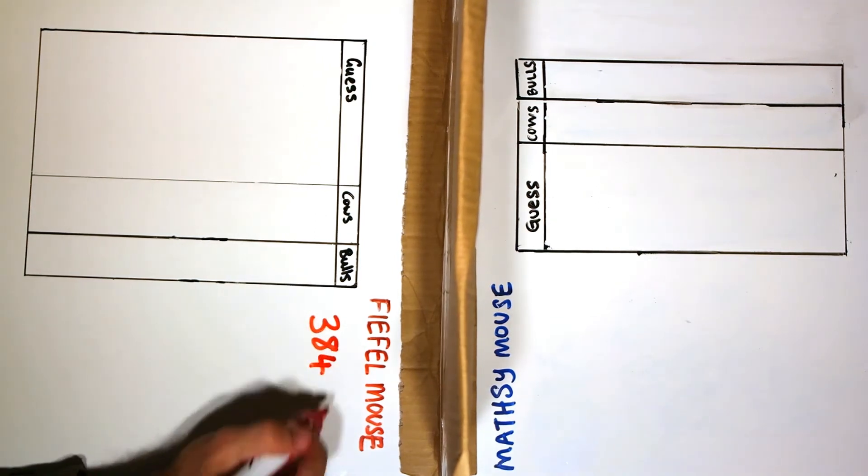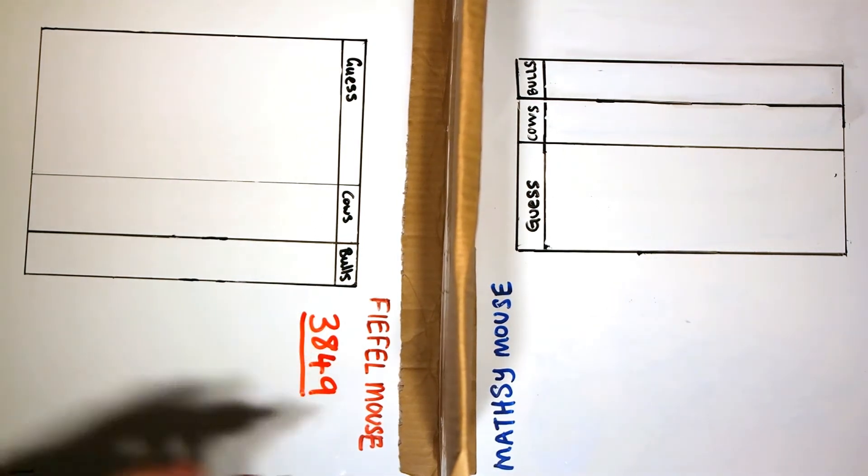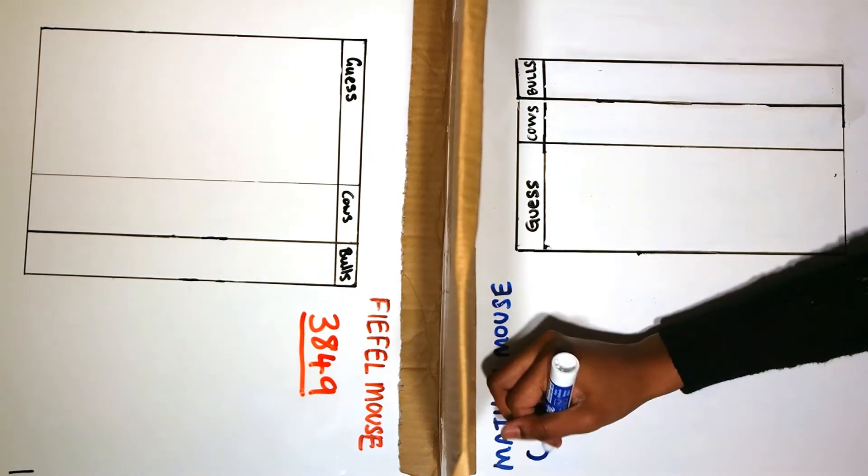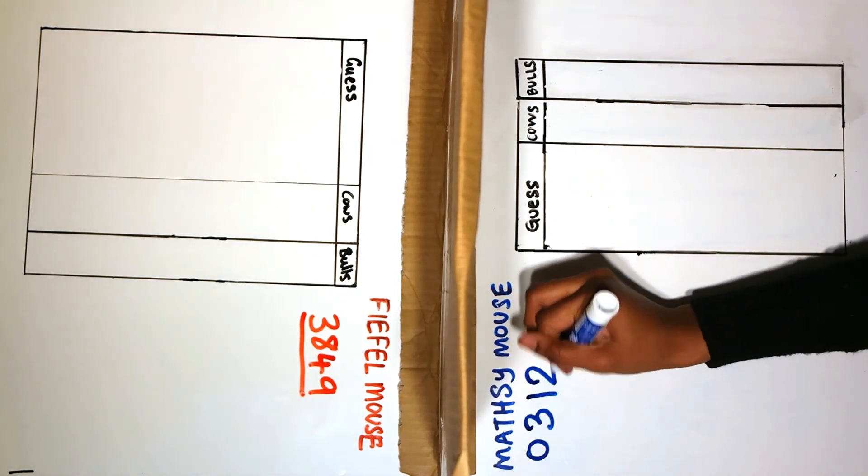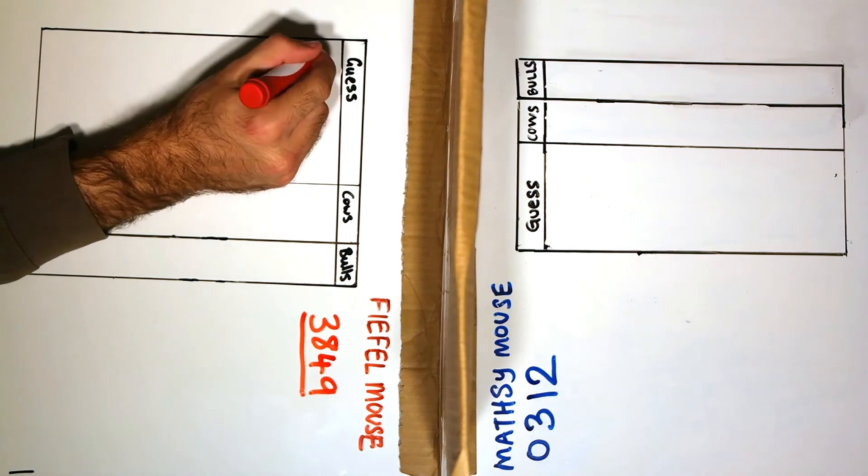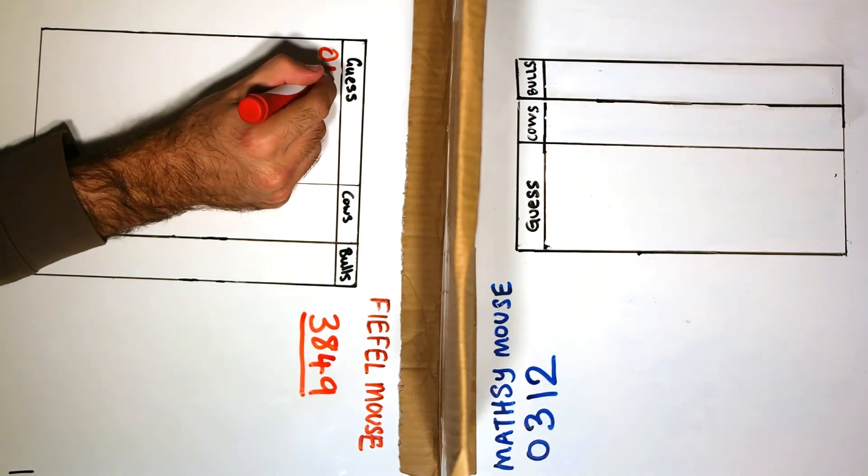My opponent was Fifle the mouse, who chose a secret combination of 3849 and my combination was 0312. We hid our numbers from each other by dividing our workspace with a piece of cardboard.